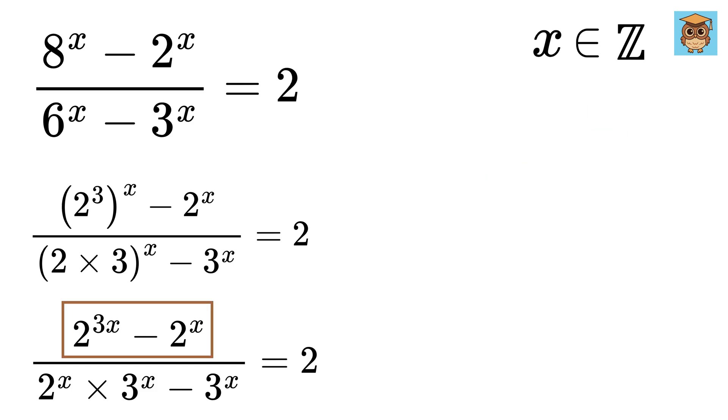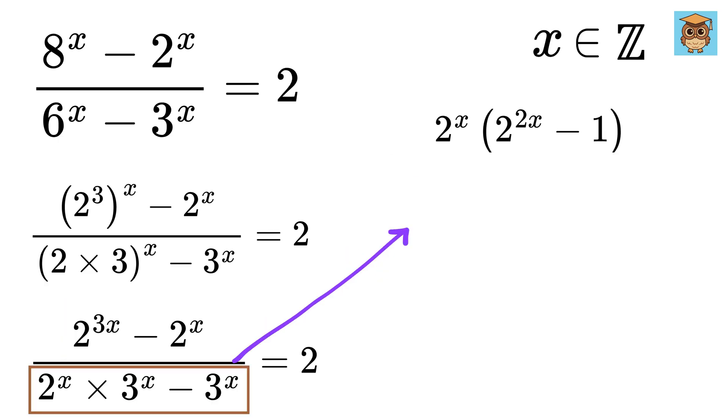Now, take 2 to the x as common from the numerator, so it will become 2 to the power of x times 2 raised to the power of 2x minus 1. Here, we will take 3 raised to x as common to make it 3 raised to x times 2 raised to x minus 1.